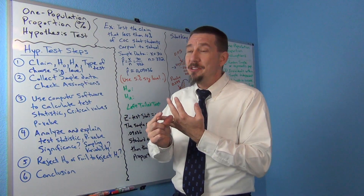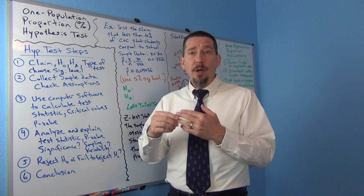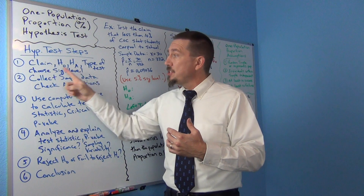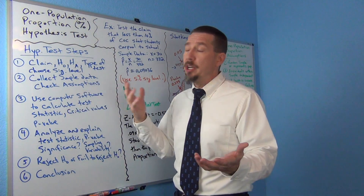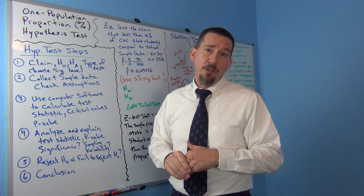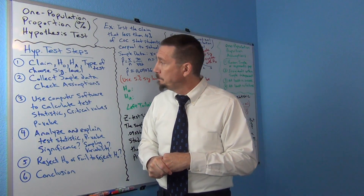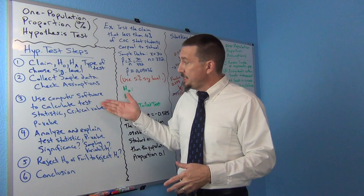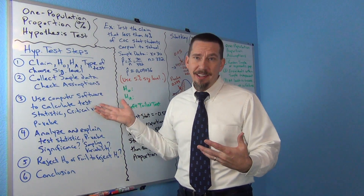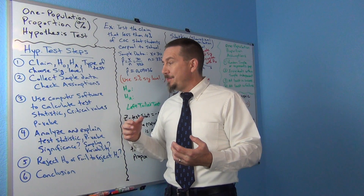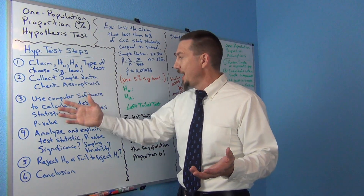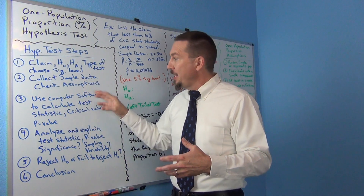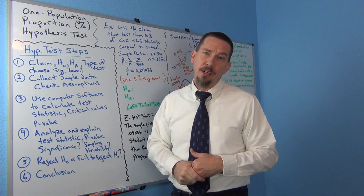You want the sample data to be reflective of the population. Try to eliminate as much bias as you can, make sure it's a random sample, a large random sample, and that it passes certain assumptions — each test has assumptions it needs to pass. These are very similar to the assumptions we used for confidence intervals. I always say use computer software; don't calculate this stuff by hand. In the real world, we always use computer software.